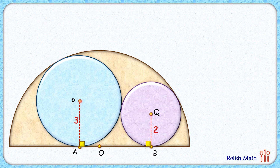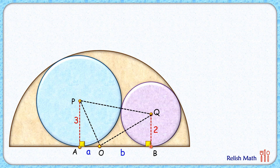To start with, let's join all three centers of the circles: PQ, PO, and OQ. Let's assume the length AO is 'a' centimeters and OB is 'b' centimeters. For our solution, we'll first find the value of a plus b, and then express a plus b in terms of the radius of the semicircle, and then solve the equation.